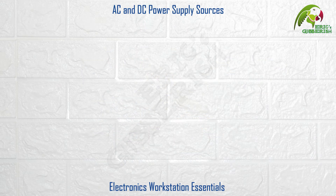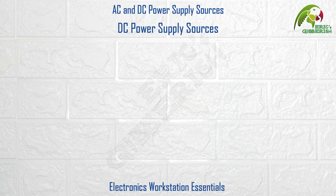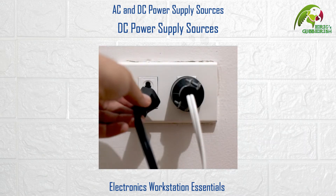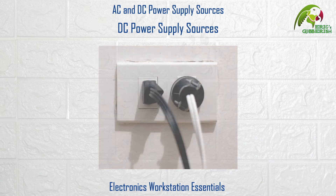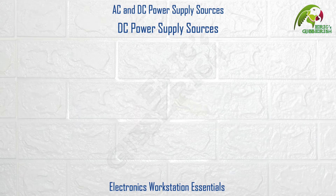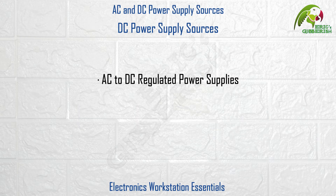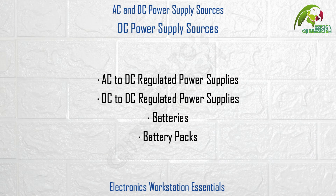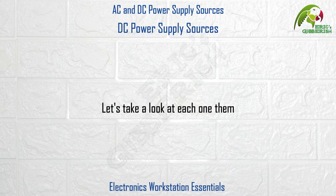Now let's go through the types of DC power supply sources. We just spoke about the AC power supply sources and noticed that there are very limited options available, which more often than not will be the wall socket AC power supply. DC power supply sources on the other hand come in a wide range of types and sorts like AC to DC regulated power supplies, DC to DC regulated power supplies, batteries, battery packs, etc. Let's take a look at each one of them.